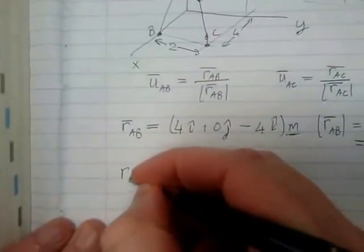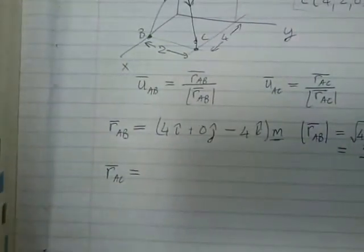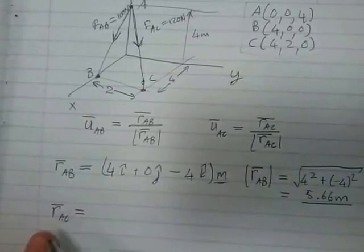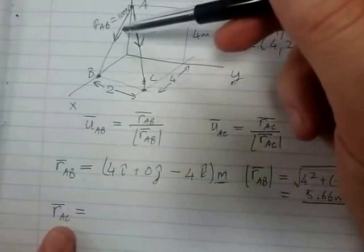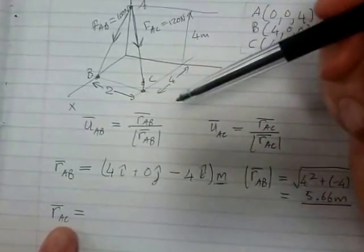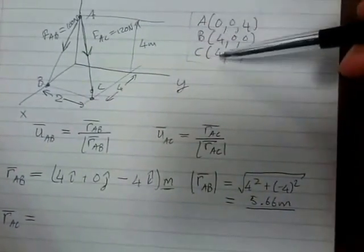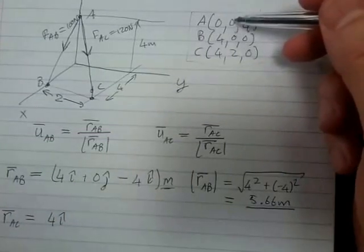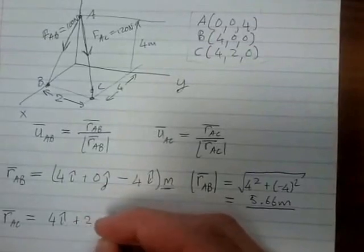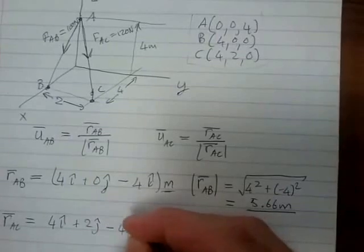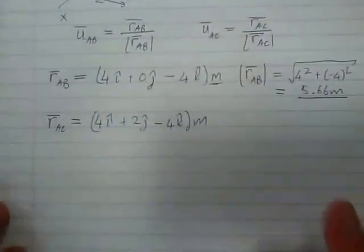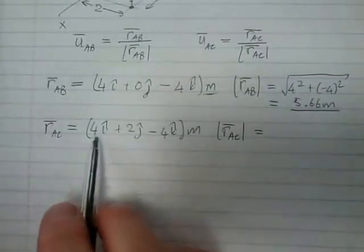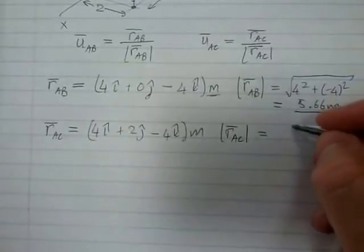Now for RAC: the position vector AC tells us how to walk from A to C. From X equals 0 to 4, we walk 4I. In Y, from 0 to 2, we walk plus 2J. From Z equals 4 to 0, we walk minus 4K. Again, position vectors are in meters. The magnitude of RAC is the square root of 4 squared plus 2 squared plus 4 squared, which gives 6 meters.